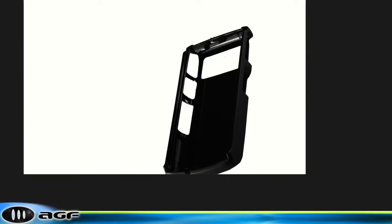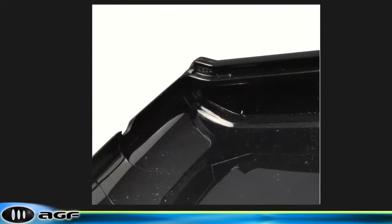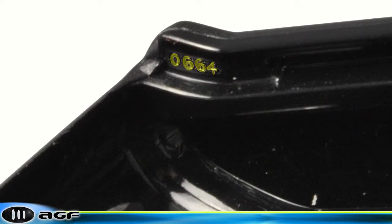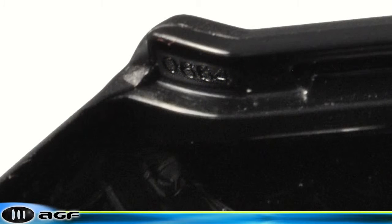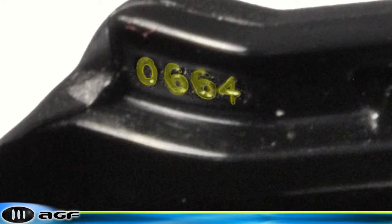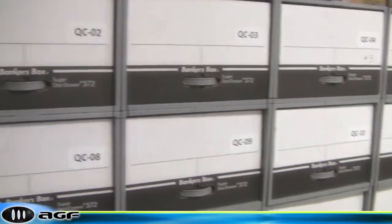We even include a small scale code on each part to identify exactly which cavity and mold that part came from. When we are qualifying a mold, we're actually qualifying each cavity of that mold separately, and this is done for our archives, which are kept for two years.